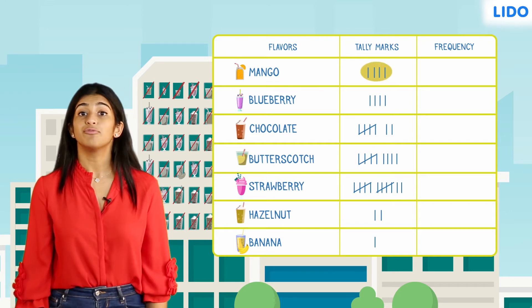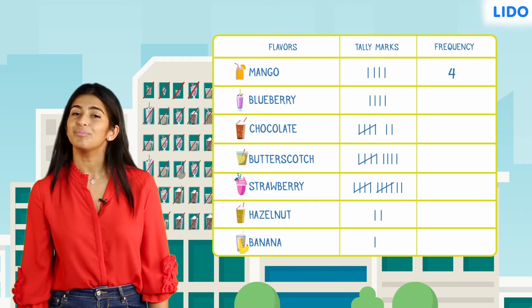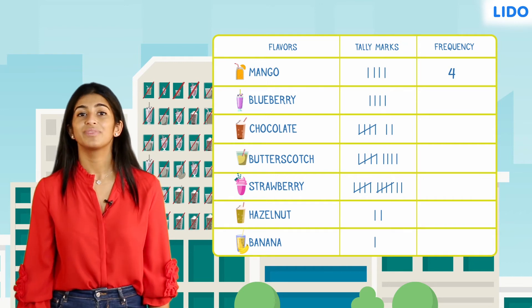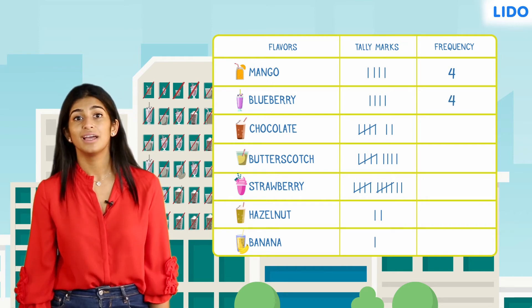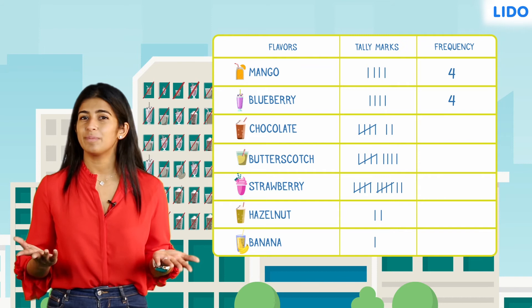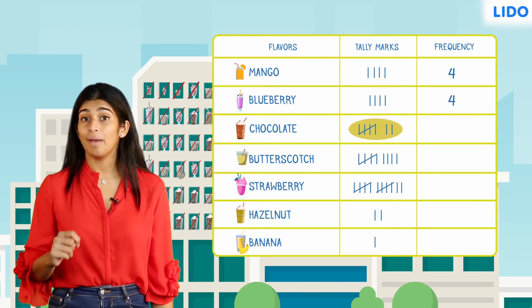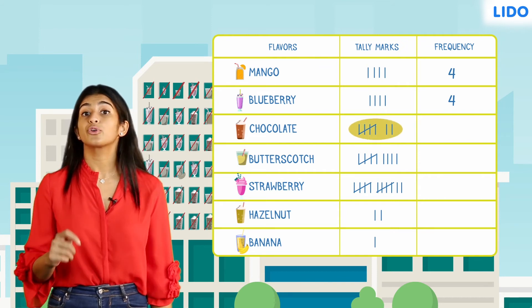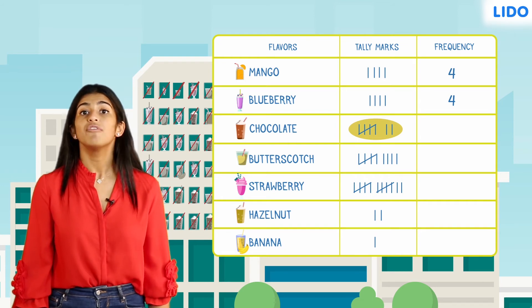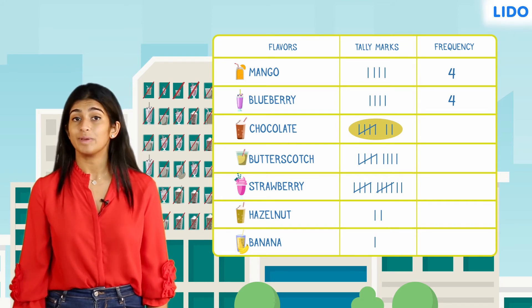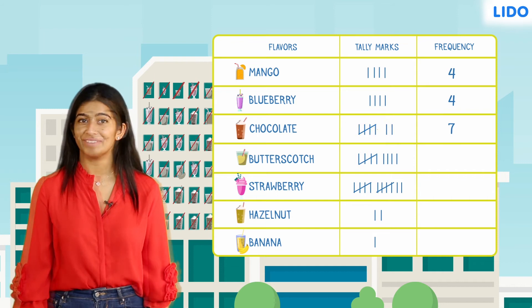Since there are four tally marks for mango, four people prefer mango. Similarly, four people prefer blueberry. How many people prefer chocolate flavour? Remember, we have grouped our tally marks in sets of five. So, five plus two people, which is seven people, prefer chocolate flavour.